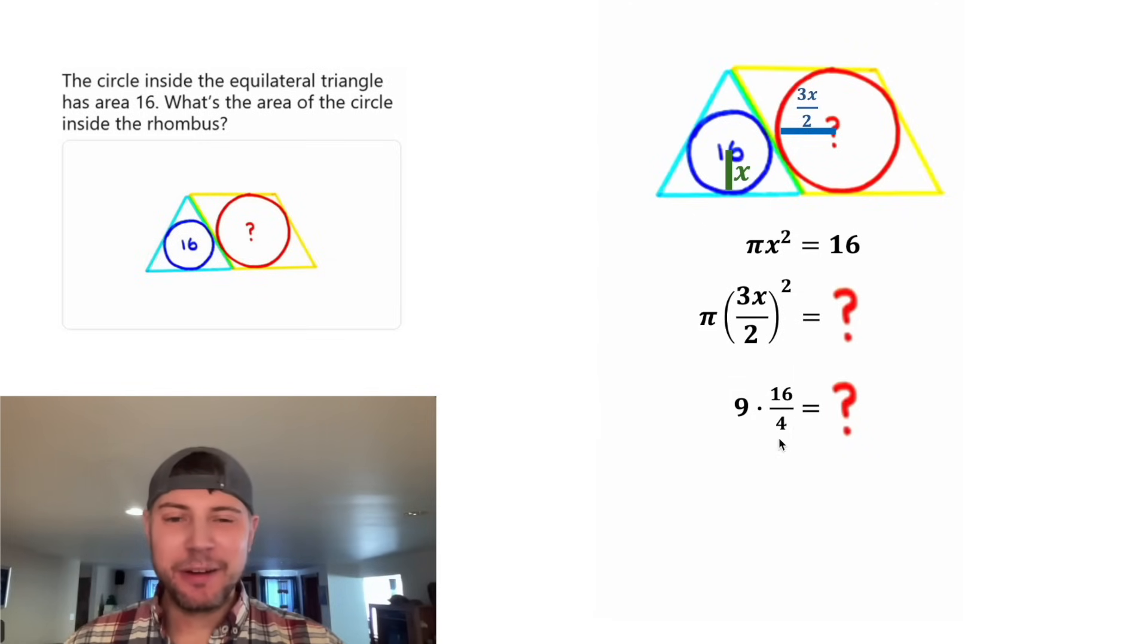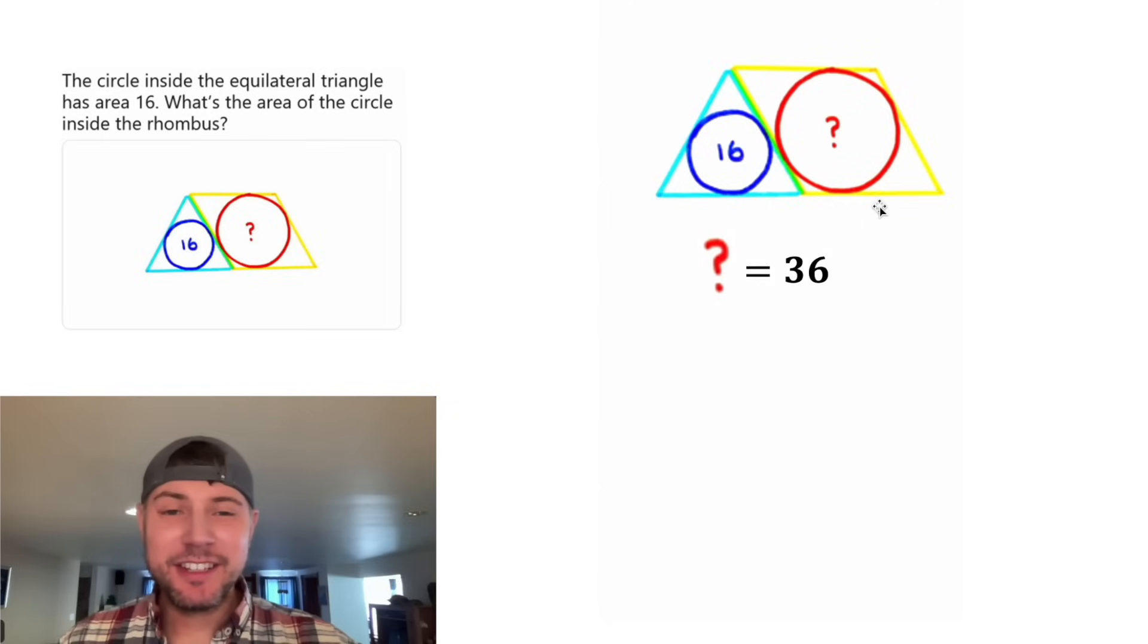So in the place of pi x squared, let's plug in 16. And 16 divided by 4 is 4. And 9 times 4 is 36. So we have 36 is equal to question mark. And this is the answer to our question. The area of the question mark circle is 36 units squared.